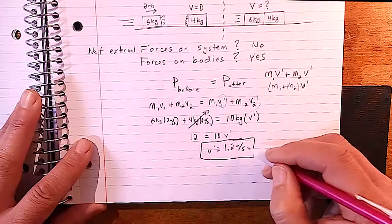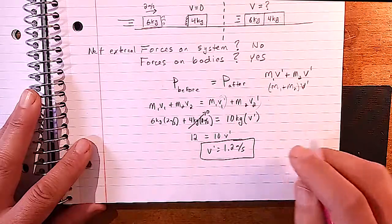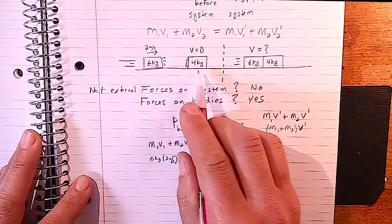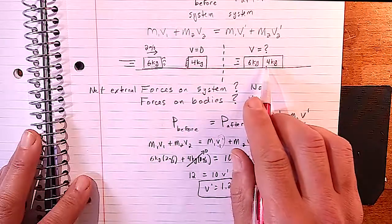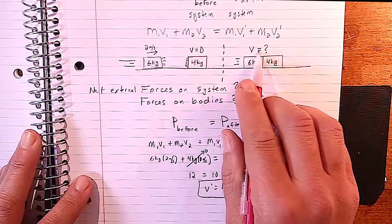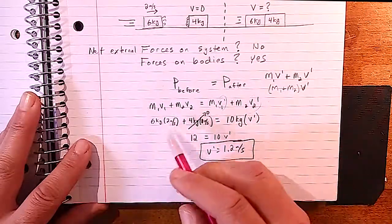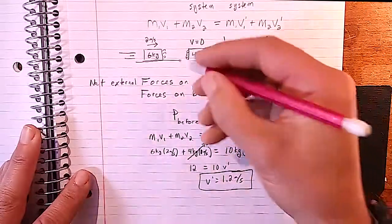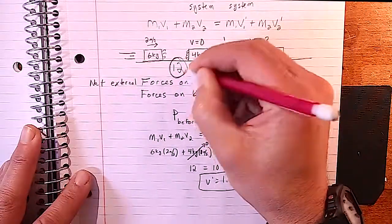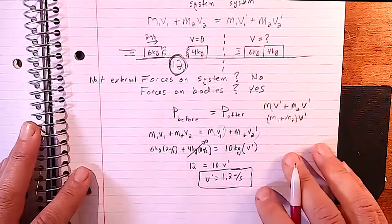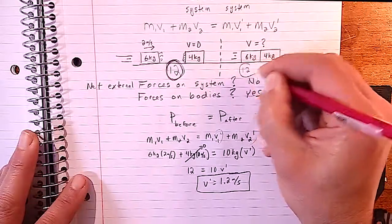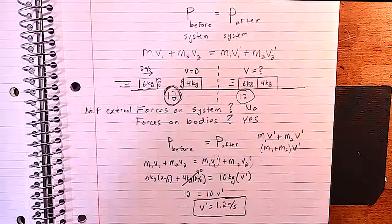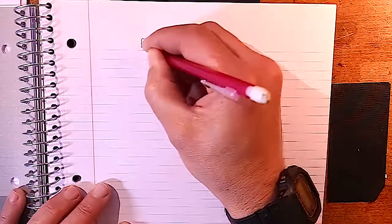Let's verify: the momentum before is 6 × 2 = 12 kg·m/s. The momentum after is 10 × 1.2 = 12 kg·m/s. So p before equals p after — conservation of momentum is confirmed.